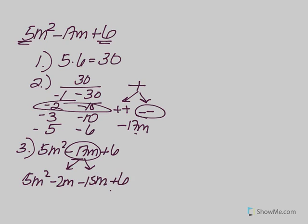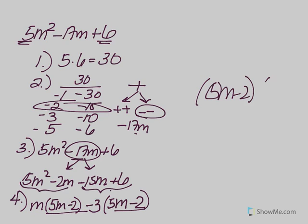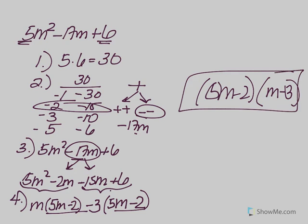So it becomes 5m² - 2m - 15m + 6 — a nice four-term polynomial. Factor by grouping: from the first two terms, pull out an m, leaving 5m - 2. For the second grouping, the first term is negative, so pull out a negative 3 as the GCF to make the two binomials match, leaving positive 5m - 2. Pull out (5m - 2), and you're left with (m - 3). That's the final answer for number 2.